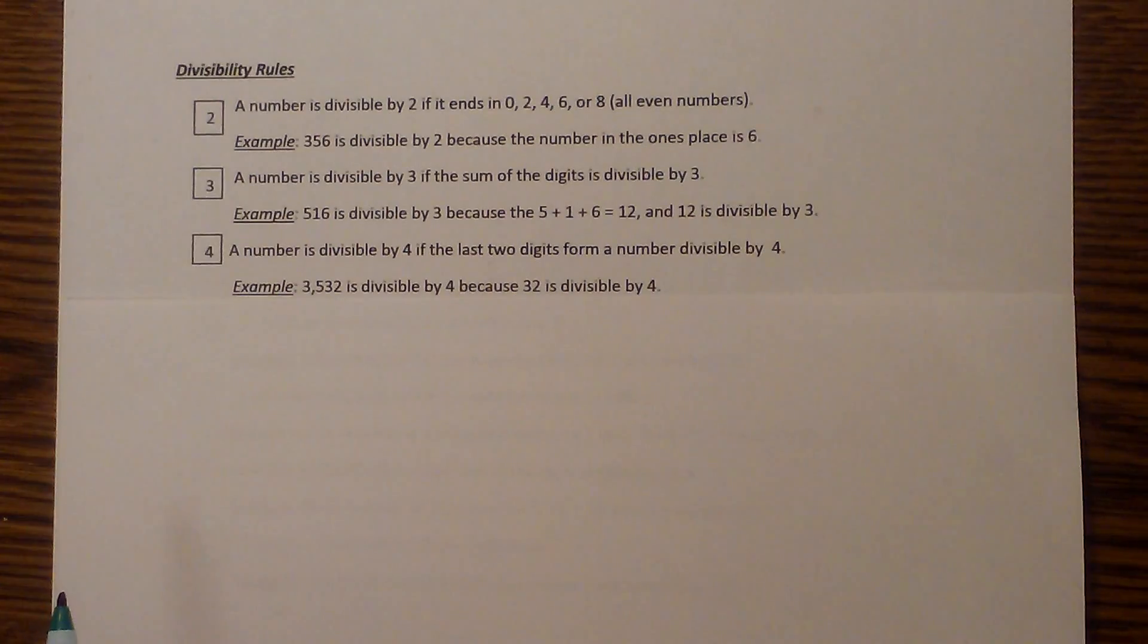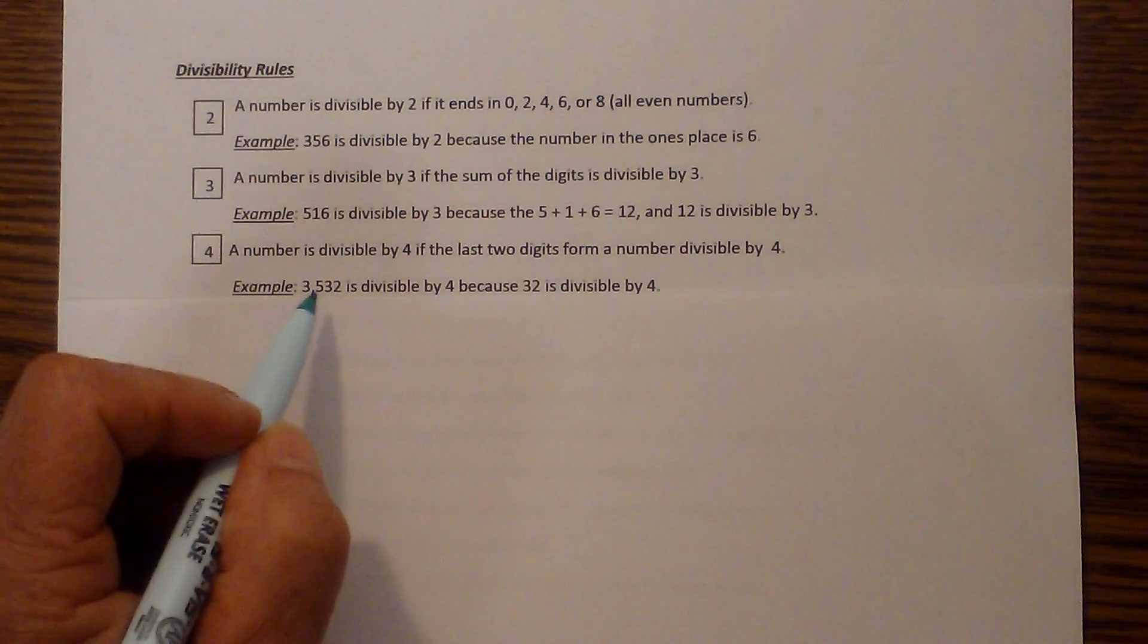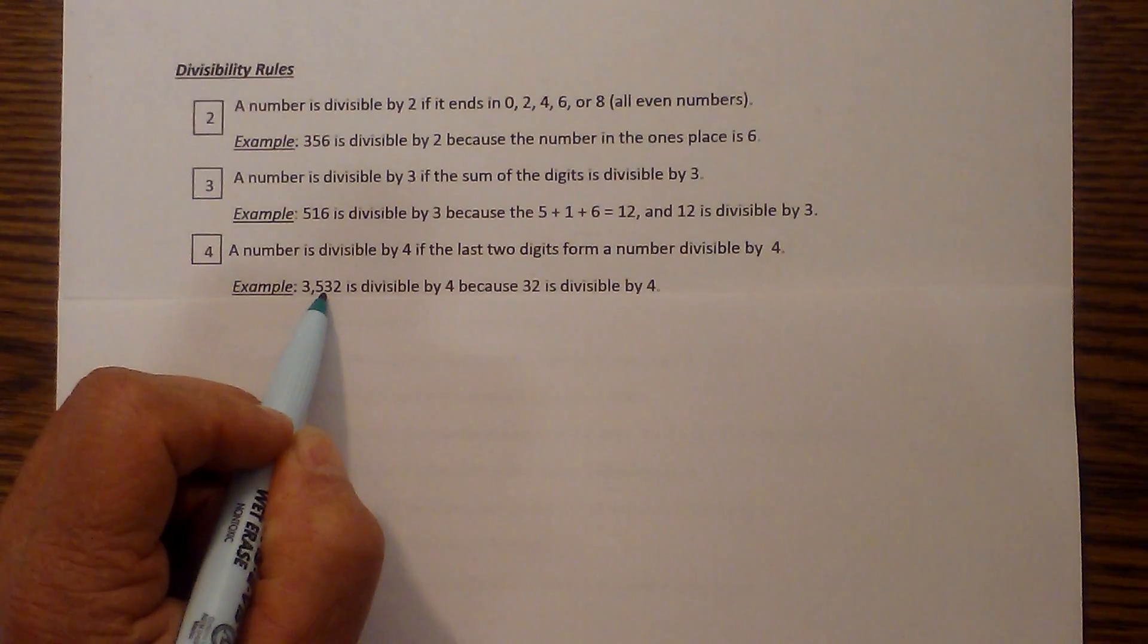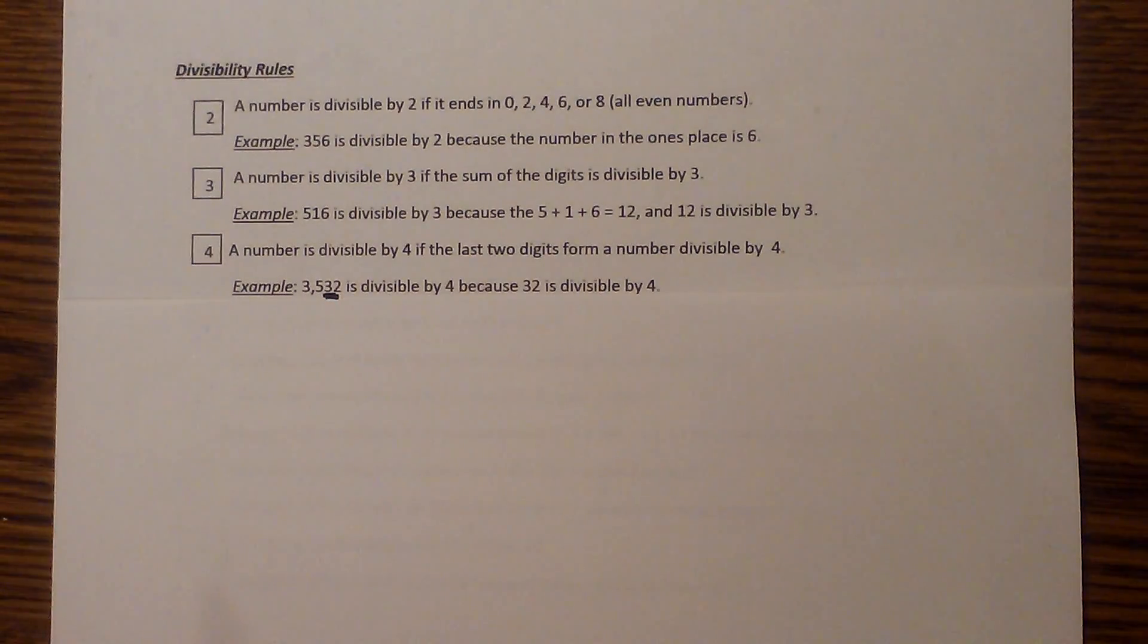Next, let's look at 4. It's divisible by 4 if the last two digits are divisible by 4. In this example, the last two digits are 32, and yes, 32 is divisible by 4 because it goes in 8 times.